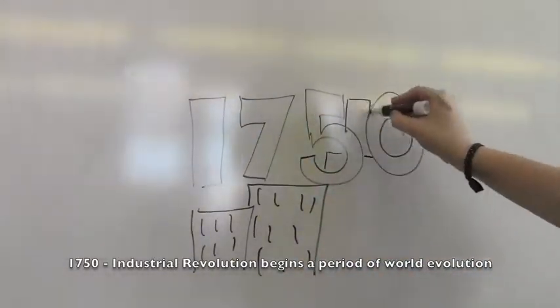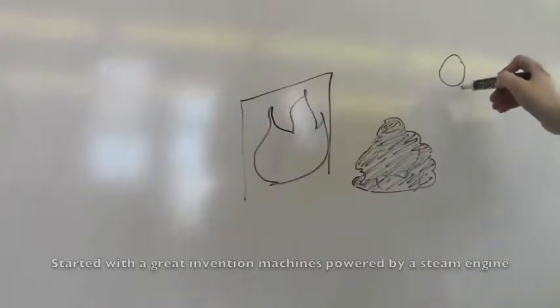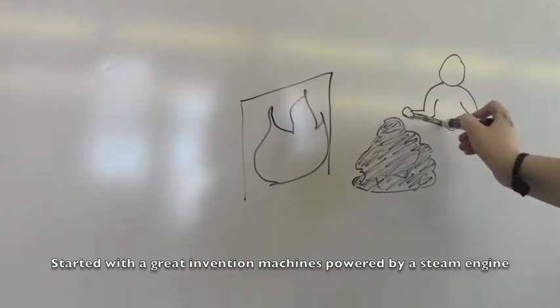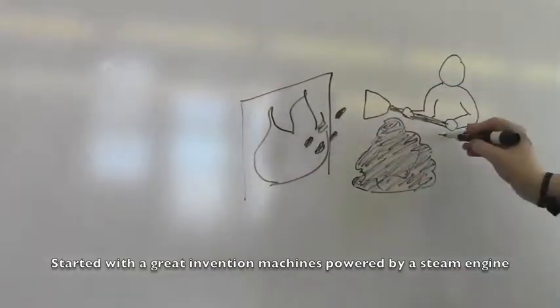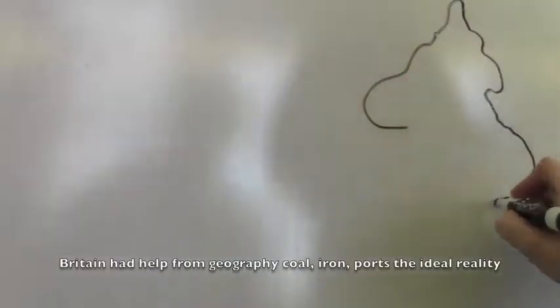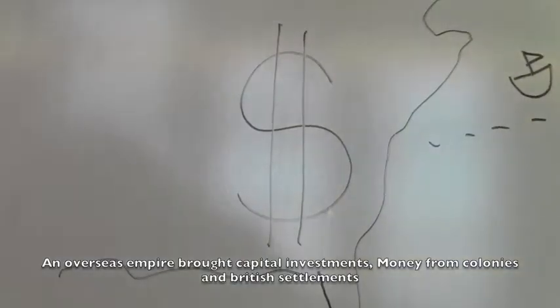1750, the Industrial Revolution begins - a period of world evolution. Started with a great invention: machines powered by a steam engine. Britain had help from geography: coal, iron, and an overseas empire brought capital investment and money from colonies.